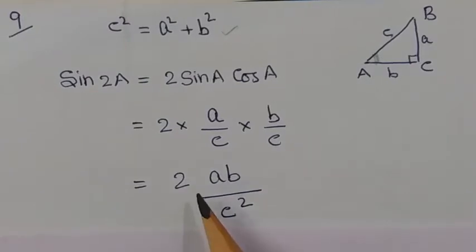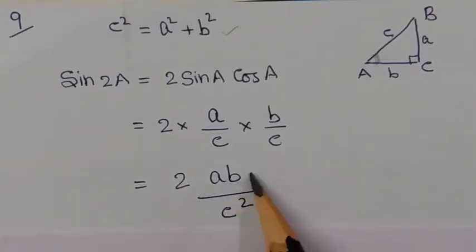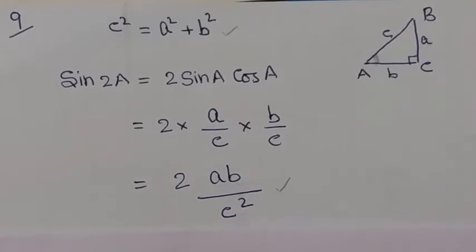Look, this is the result. We have shown that sin 2A is equal to 2AB upon c². So this is the result.